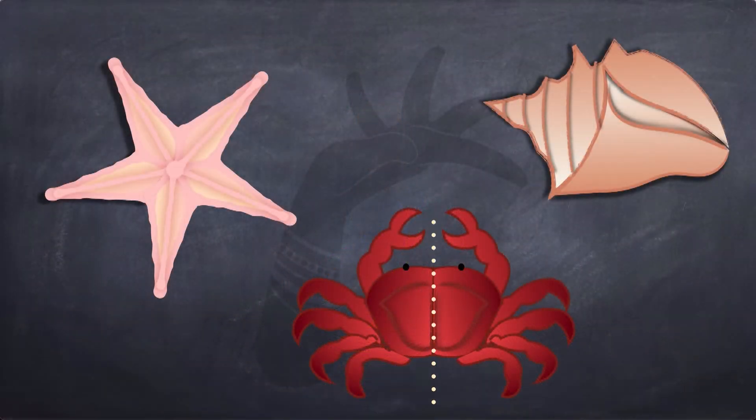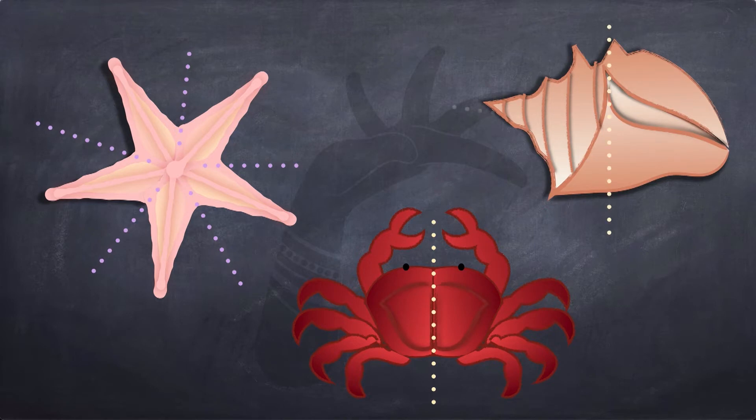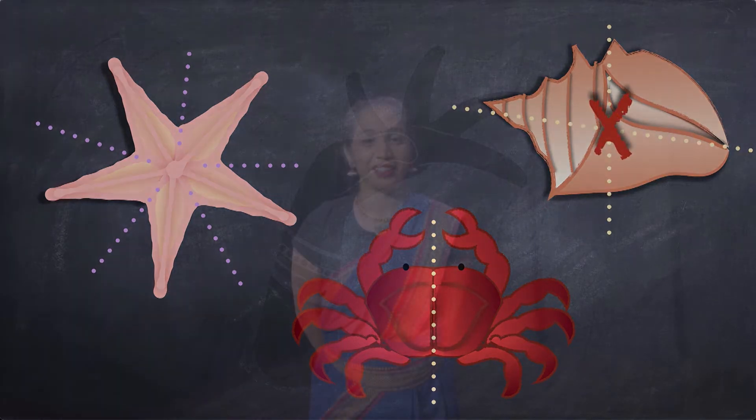As you can see, there are different kinds of symmetry. Let's try to use movement to explore these different kinds of symmetry. Here are Gayathri and Crystal — they are going to show us what bilateral symmetry looks like in movement.